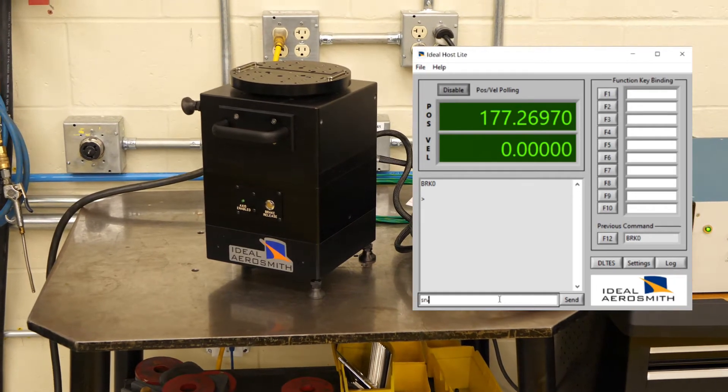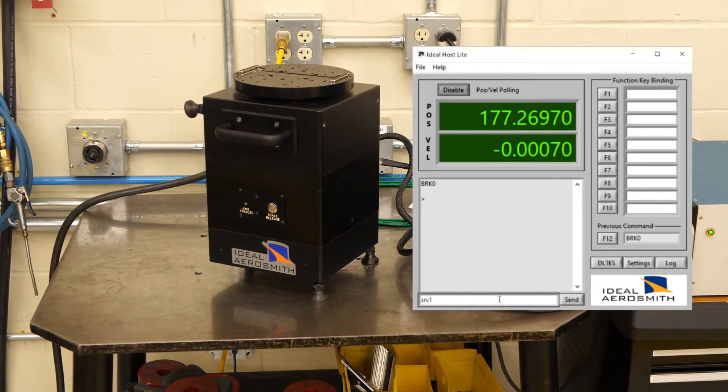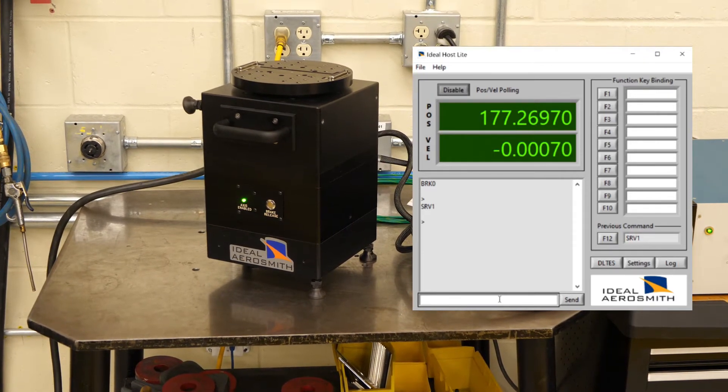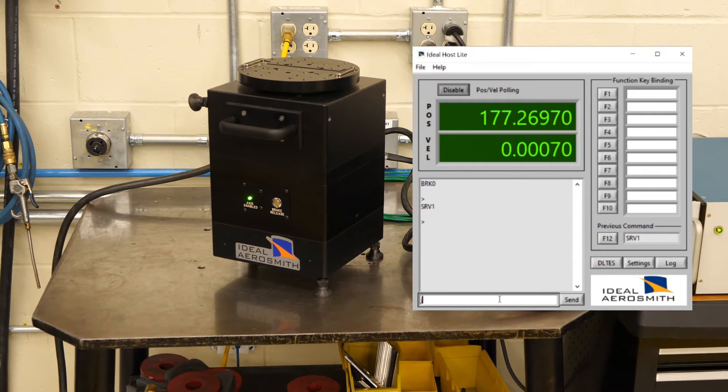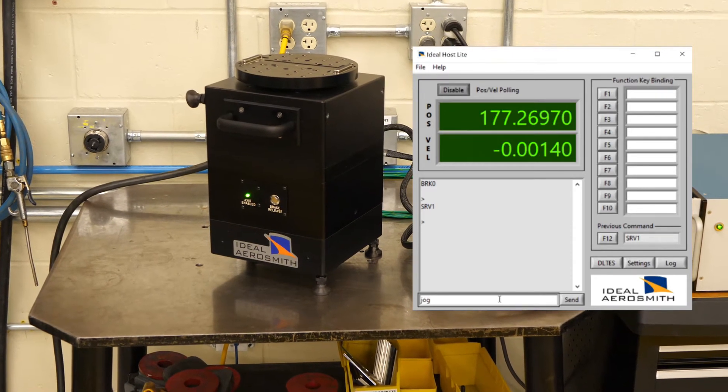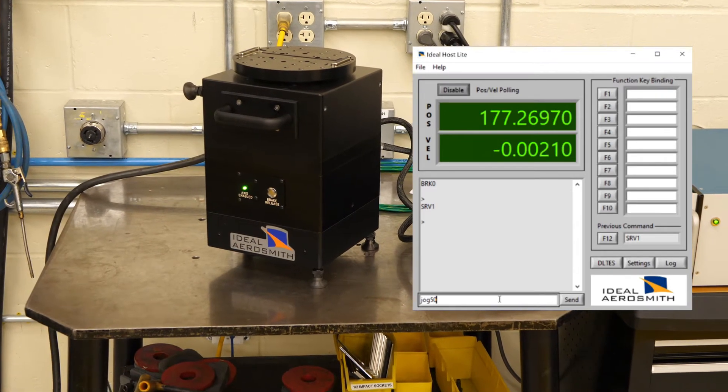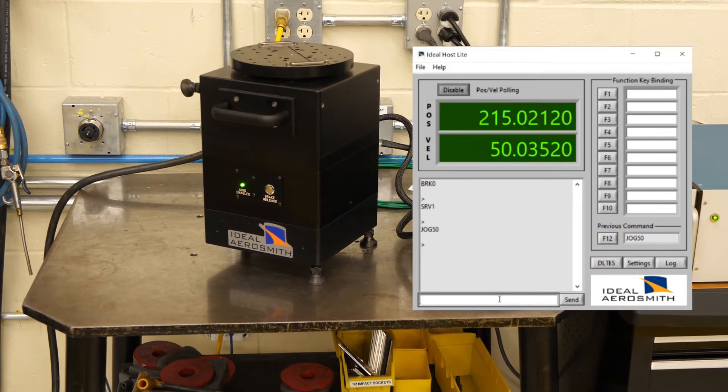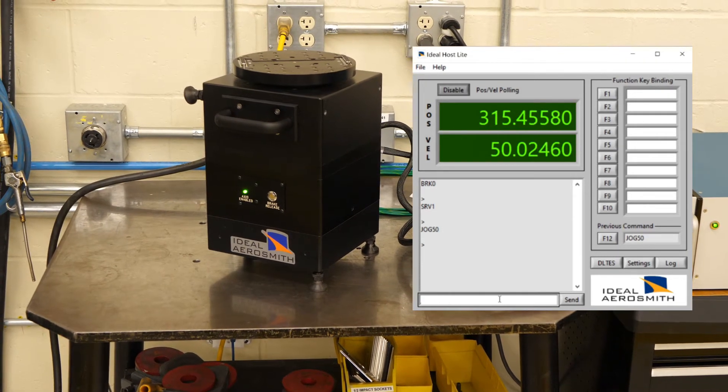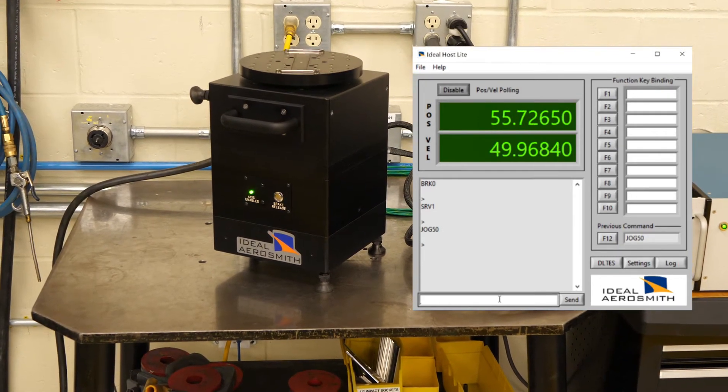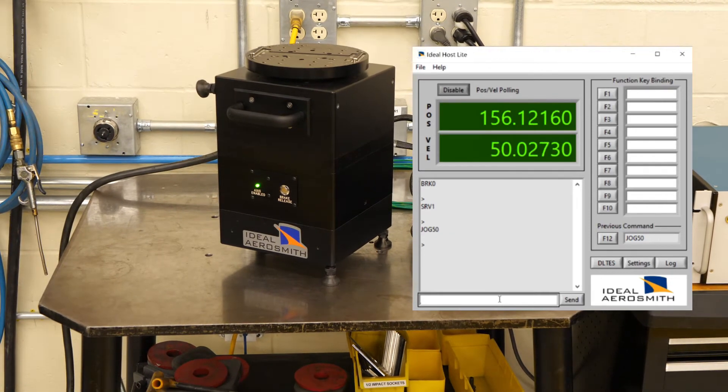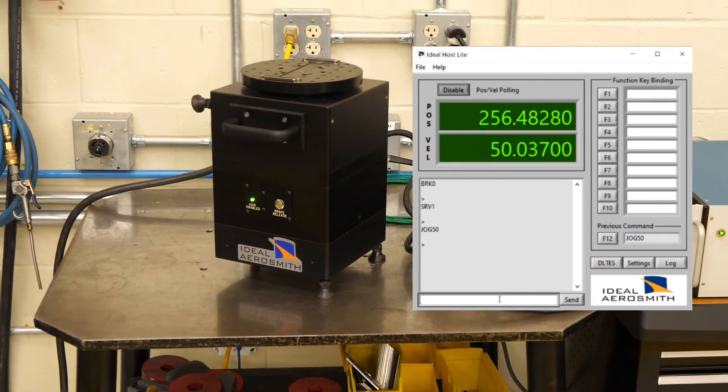We'll then enter SRV1, which is the command to enable the amplifier. And we will command a motion. In this case, we will jog a rate command at 50 degrees per second. We can see on our polling that the velocity is 50 and the position is counting up. And if we look at our rate table, it spins away.